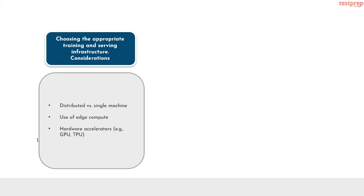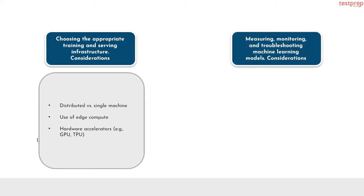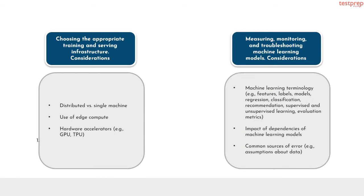Number 4, measuring, monitoring, and troubleshooting machine learning models. It contains 3 subtopics: first, machine learning terminology, for example features, labels, models, regression, classification, recommendation, supervised and unsupervised learning, evaluation metrics; second, impact of dependencies of machine learning models; third, common sources of error, for example assumptions about data.